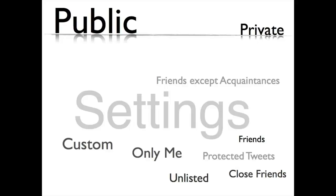Instagram, an online photo sharing service, is another example which, again, by default, allows anyone to view your photos until you modify your privacy settings so only your approved followers can view them.